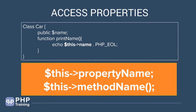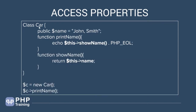You can access the class property via the $this keyword. Previously we just had 'name', but now with $this it refers to the object instance, and via that object instance you can access the property of the class. You can say $this->propertyName or $this->methodName. So in the car class example, the print name method can call show name, and show name can access the name property — all via the $this keyword.